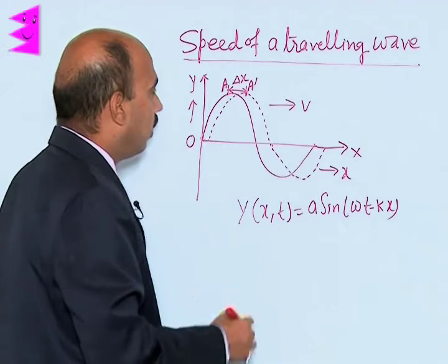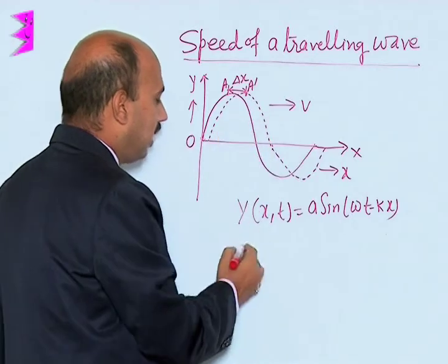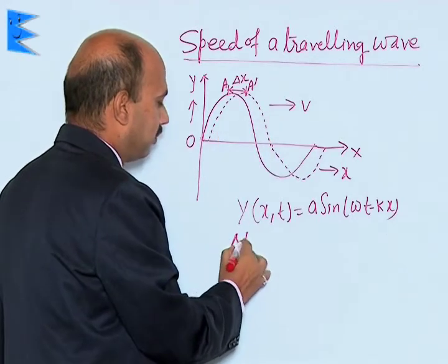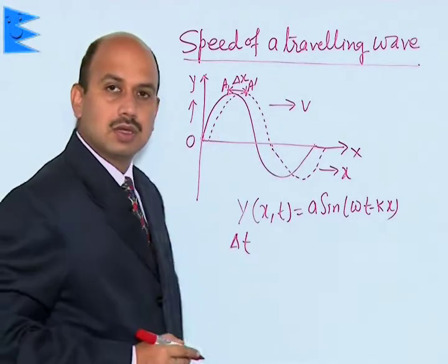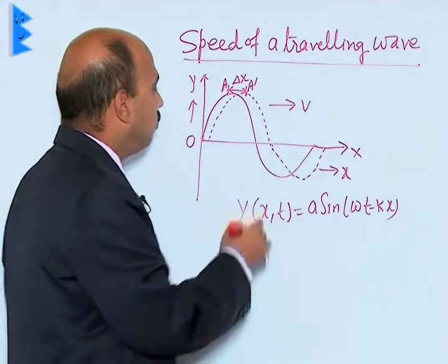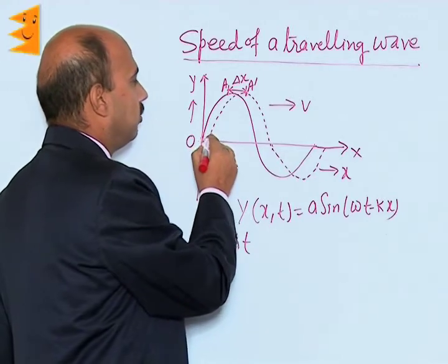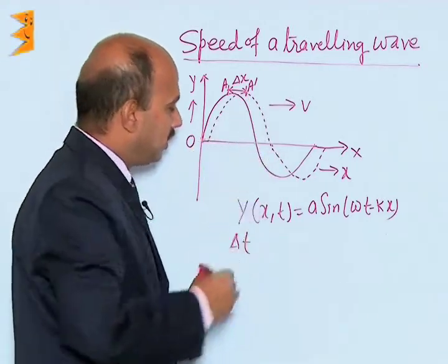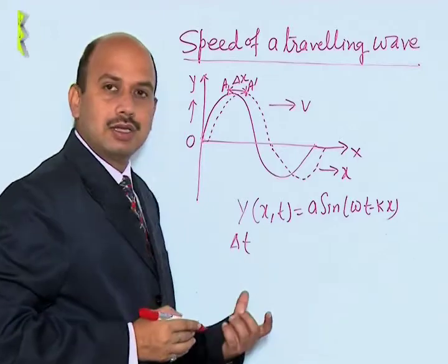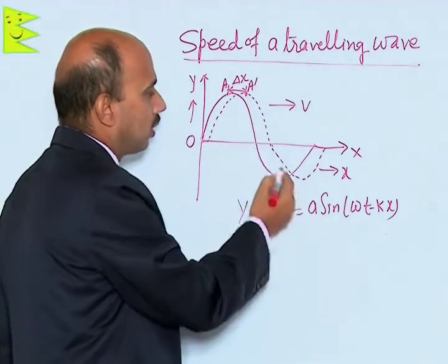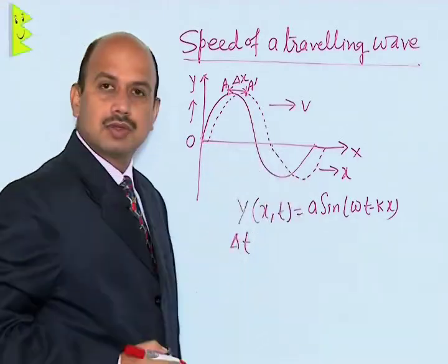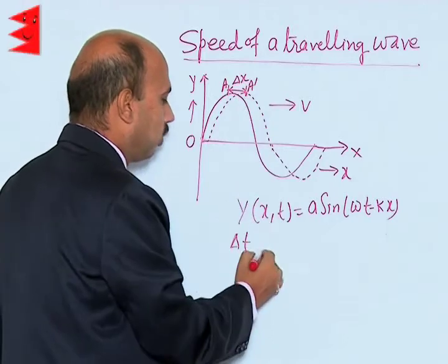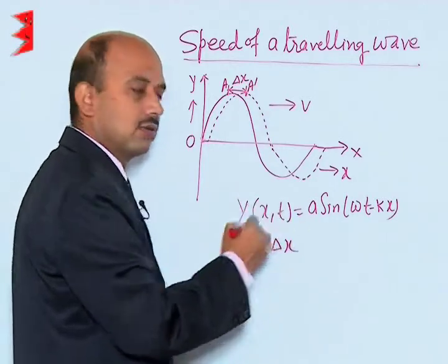Now, after time Δt, suppose the wave travels some distance — the wave is here, shown by the dotted line. So after time Δt, the wave is shown by the dotted line, and there is a displacement of suppose Δx.